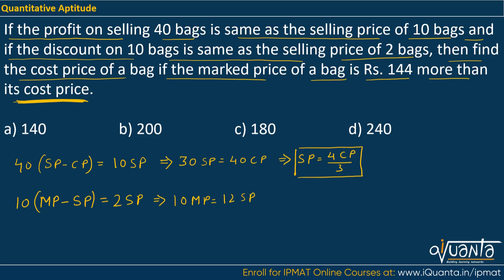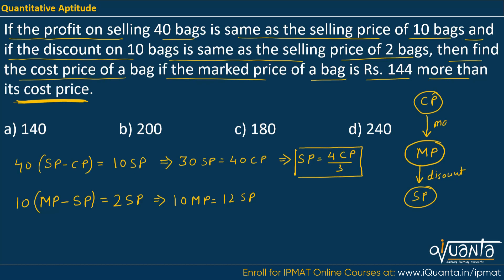Find the cost price of a bag if the mark price of a bag is Rs. 144 more than its cost price. To clarify: mark price is the price on which we provide a discount to get the selling price. And if you increase the CP by a particular quantity you get the mark price — that increase from cost price to mark price is called markup. That is how cost price, mark price and selling price are related.